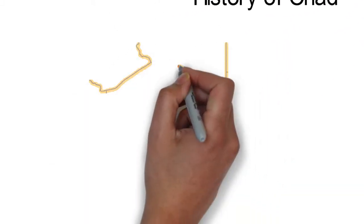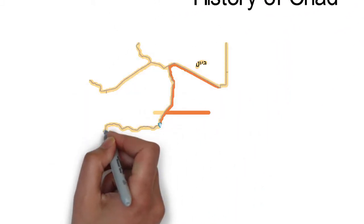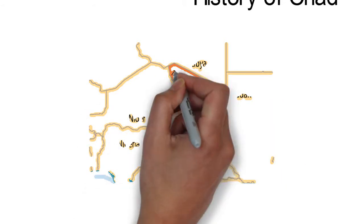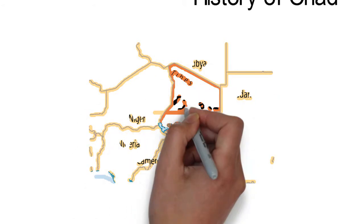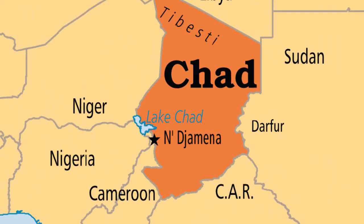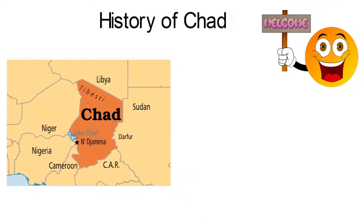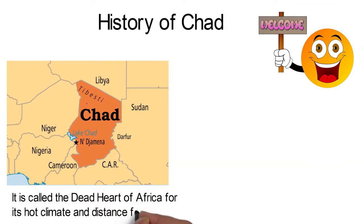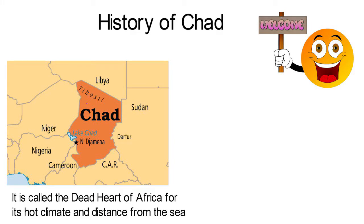Chad, also known as the Republic of Chad, is situated in Central Africa. It borders Libya, Sudan, Central African Republic, Cameroon, Nigeria, and Niger to the north, east, south, southwest, and west respectively. It is called the dead heart of Africa for its hot climate and distance from the sea.